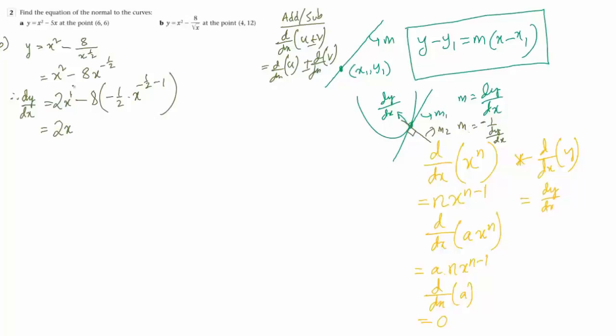So 2x, now minus 8 into minus half if you multiply it would be plus 4, and x to the power minus half minus 1 is minus 3 by 2. So minus 3 by 2 is the exponent. Now we have to make it positive. It's a good idea because otherwise calculation becomes complicated: x to the power 3 by 2.